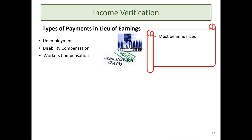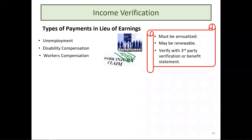Types of payments in lieu of earnings include unemployment, disability, and workers' compensation. These must be annualized. Unemployment is generally approved for six months but can be renewed, so count it as annualized payments. Verify with a third-party verification or benefit statement.